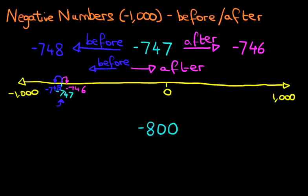Let's assume we've got the number minus 800. And the question is, what number comes after? What number comes after minus 800? Well, first of all, let's find number 800, minus 800, on the number line.